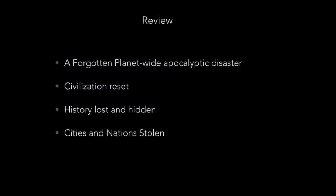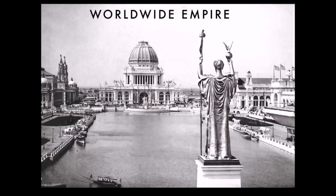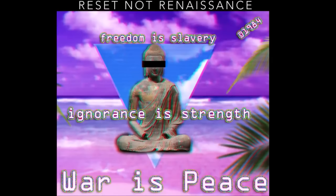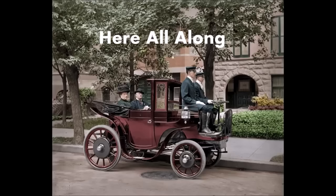So to review, we've been talking about a planet-wide apocalyptic disaster which caused a great mud flood that then destroyed a worldwide empire that then went through a giant reset. History was hidden and erased in order to hide what had happened. The empire was rebranded to hide it, and it wasn't rebuilt — it was here all along. Some of it was demolished, even.